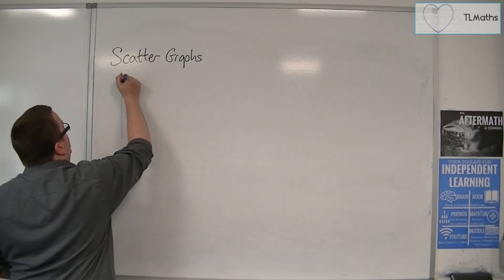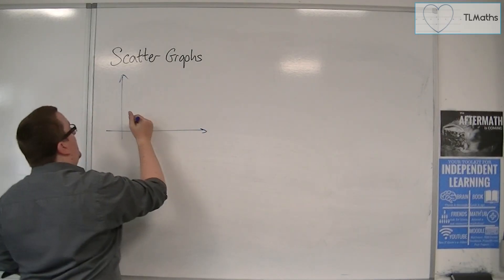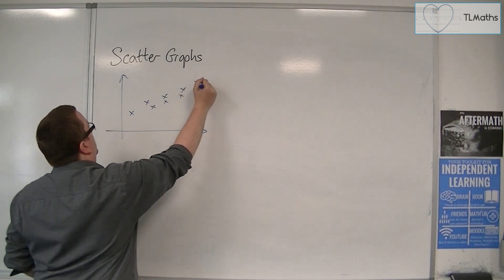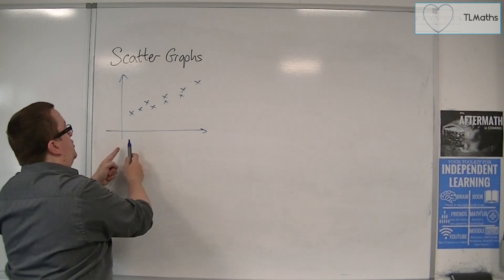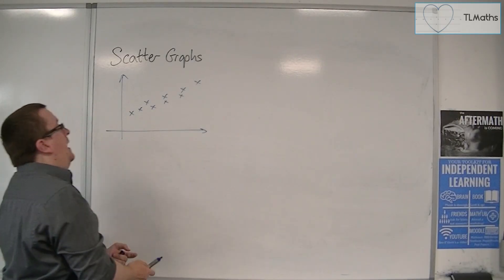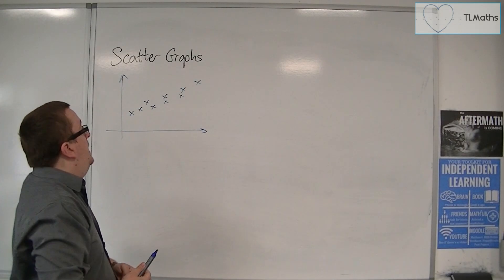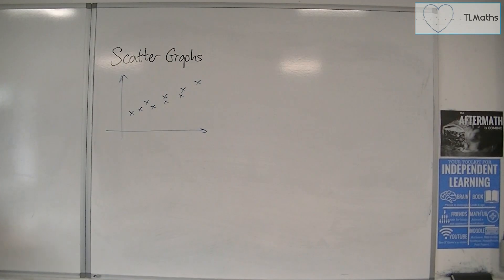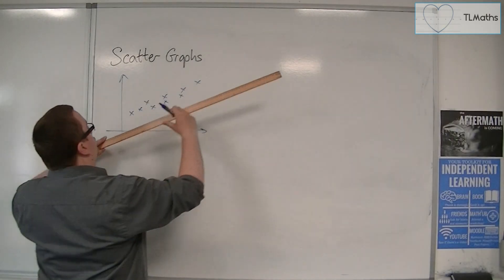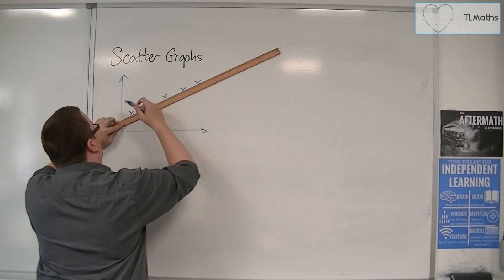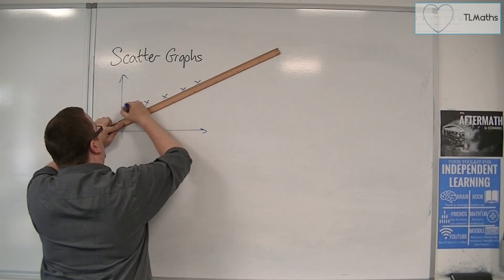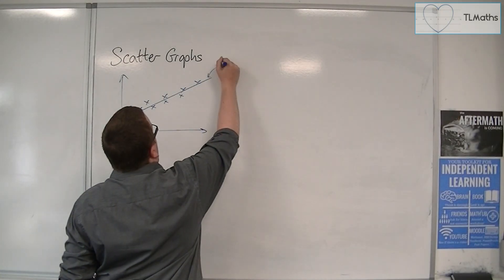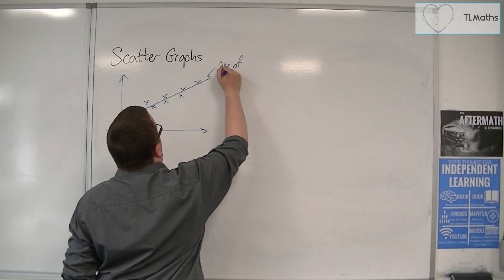For example, the data may look something like this. And we plot the data along two axes. And the data might be plotted out like this. And what we can see is that actually the data looks like it's tending towards a straight line. And we'd be able to draw what is referred to as a line of best fit. So we could call that the line of best fit.